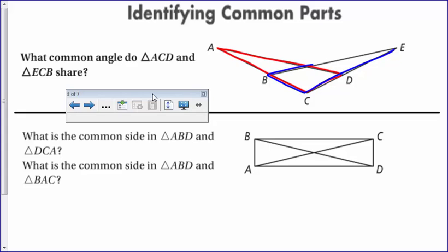So now that I have my two triangles, we can definitely see what common angle, since we're talking about angles, has both the blue and the red. So right now you can see the angle C, okay, or yeah, angle C is our common angle. So when we do a proof,